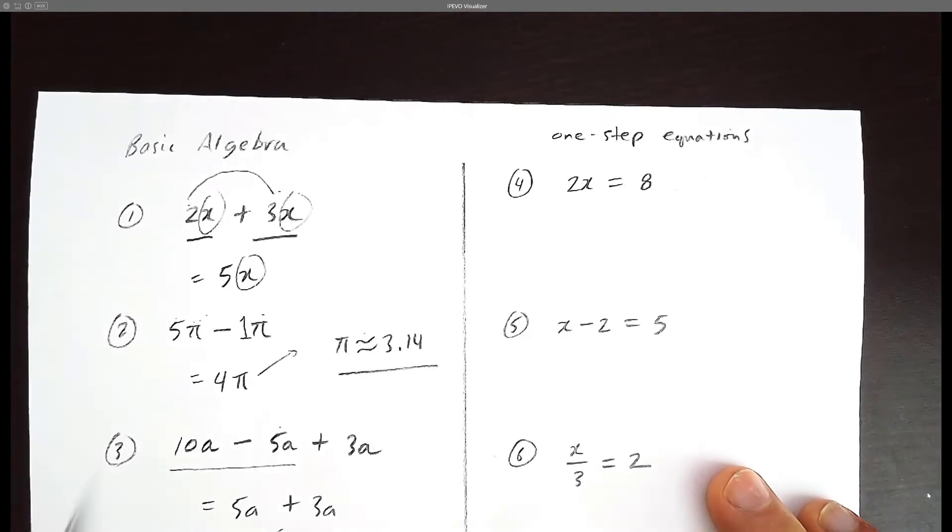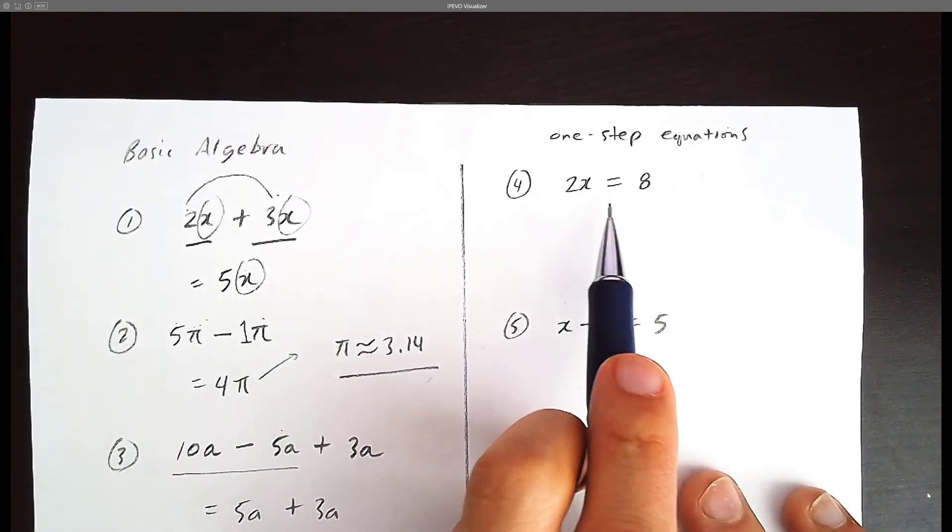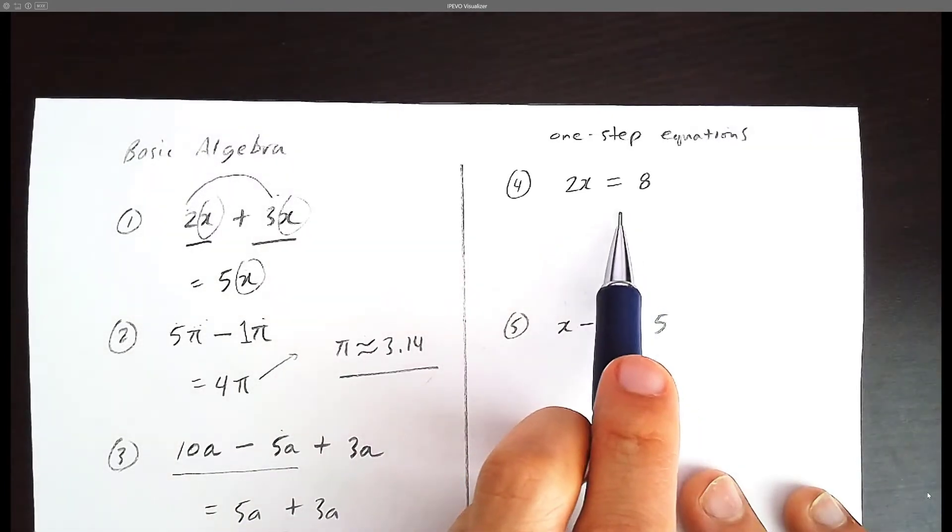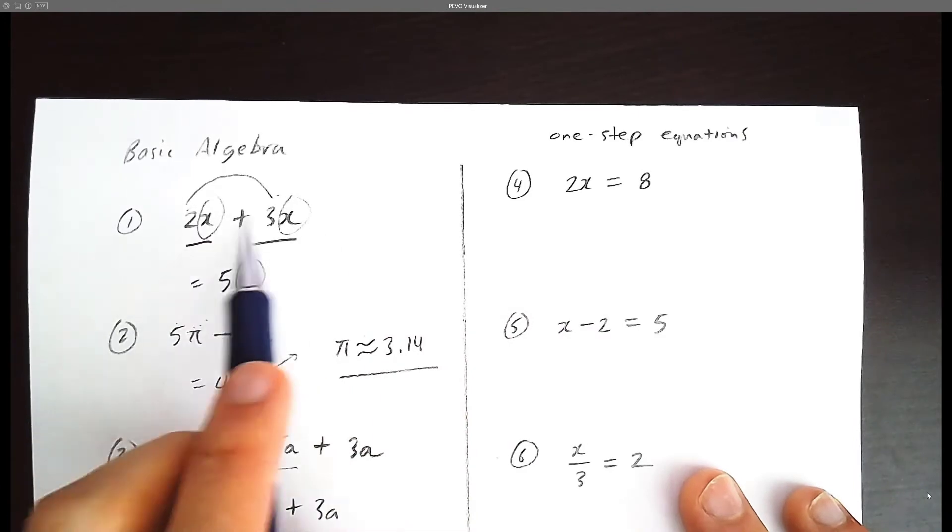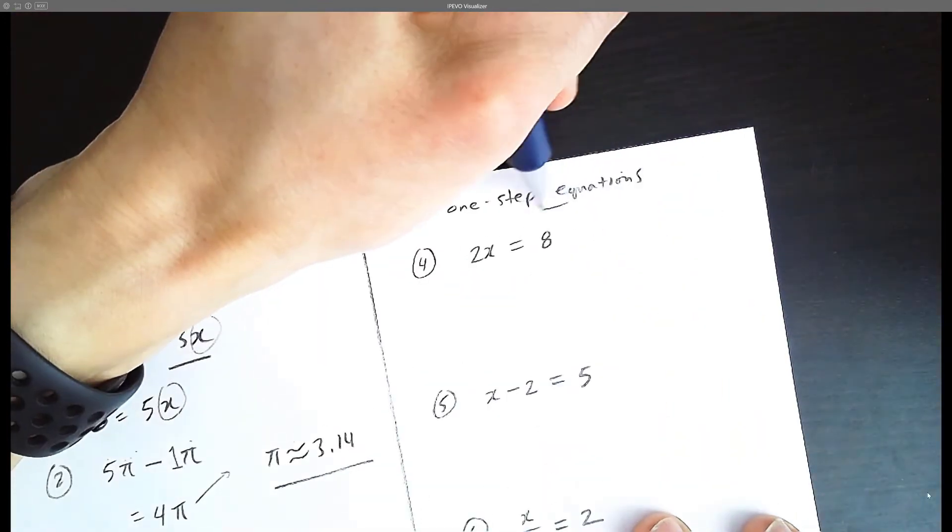So here we practiced some basic algebra. We learned how to combine the x's, combine the π's, or combine the a's. Now this time we have an equal sign, so we no longer call this just adding terms, but we call this an equation, because there's an equal sign here. The word equation means we have an equal sign.